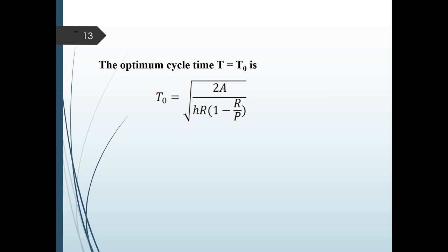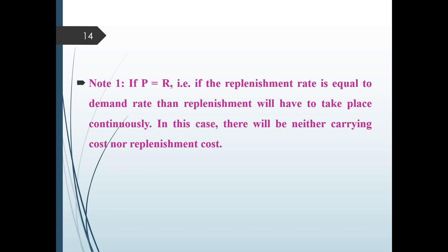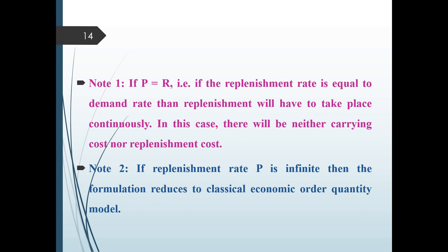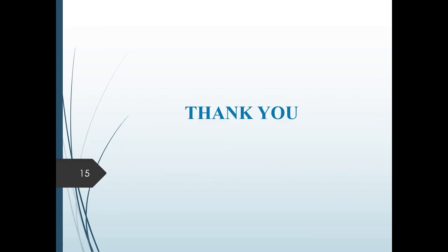Once Q is known, the cycle time can be obtained as Q/R, which simplifies to the square root of 2AR divided by HR times (1 minus R/P). As a special case, if P equals R, meaning replenishment rate equals demand rate, then replenishment would have to take place continuously, resulting in neither a carrying cost nor a replenishment cost. If the replenishment rate P is infinite, the formulation reduces to the classical economic order quantity model.